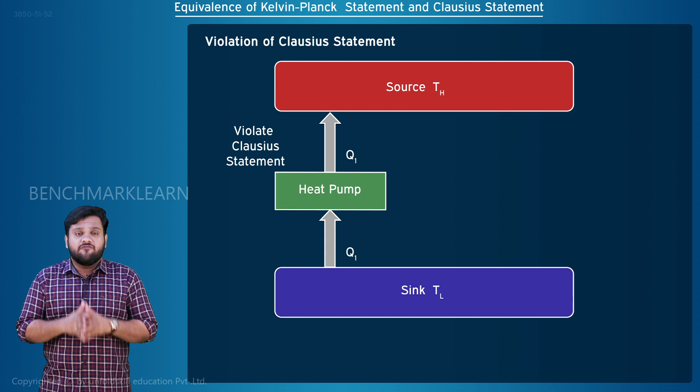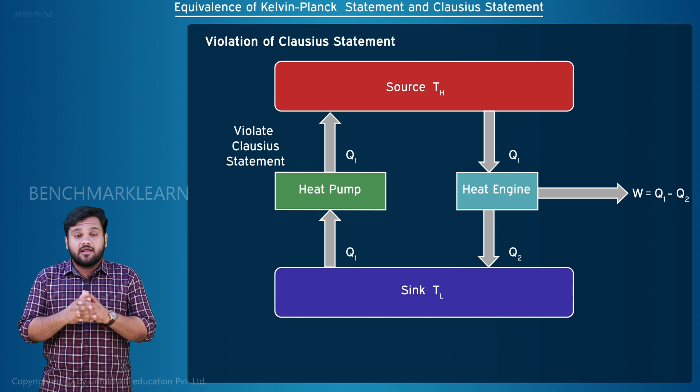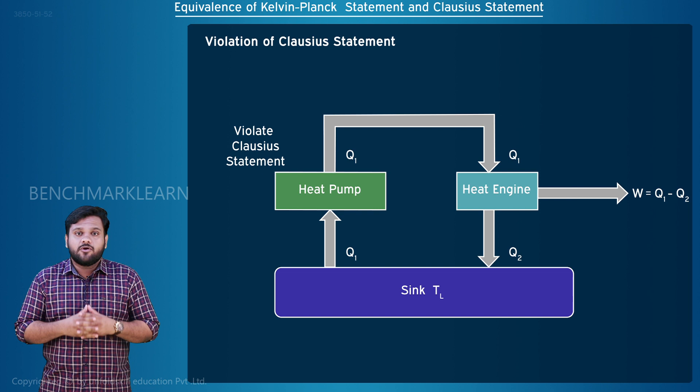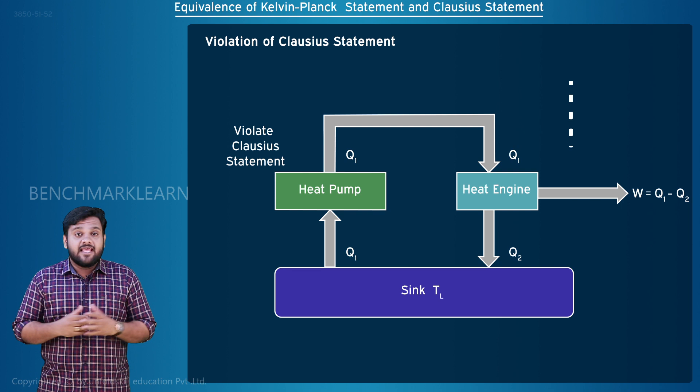Also consider another heat engine that draws the same amount of heat Q1 from the hot reservoir to do work W, rejecting heat Q2 to the cold reservoir. Now let us eliminate the hot reservoir and directly connect the output of the heat pump to the input of the heat engine. Heat Q1 from the heat pump is directly received by the heat engine, so we get a combined heat engine with no hot reservoir.